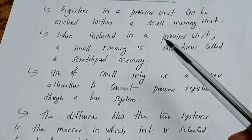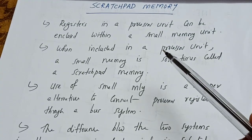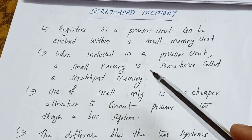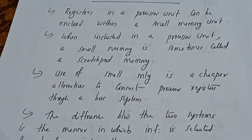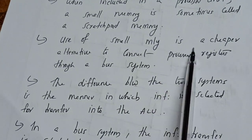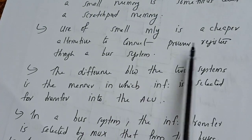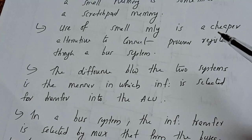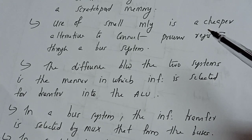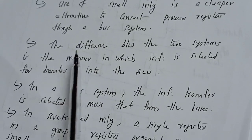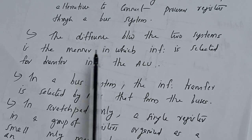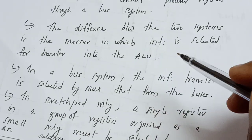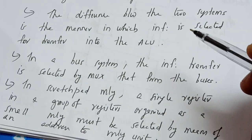Now we will see the advantages of scratchpad memory compared to buses. First, use of a small memory is a cheaper alternative to connecting processor registers through a bus system. Second, the difference between the two systems is the manner in which information is selected for transferring to the ALU.